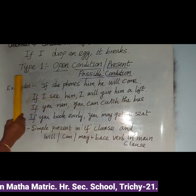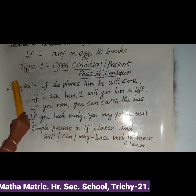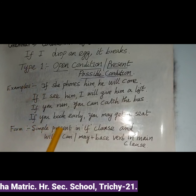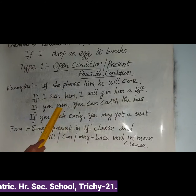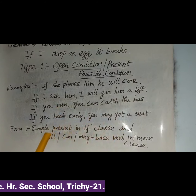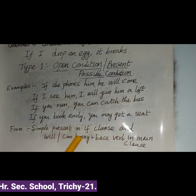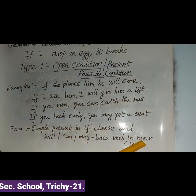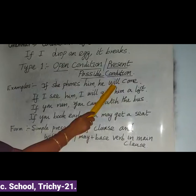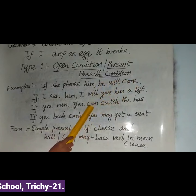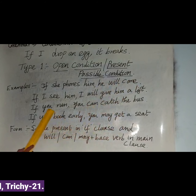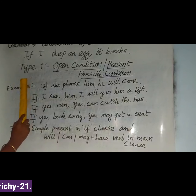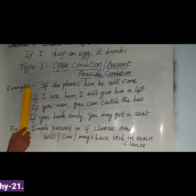So the form of Type 1 is: simple present in the if-clause — phones, see, run, book — and will / can / may plus base verb in the main clause — will come, will give, can catch, may get. I think now you have understood Type 0 and Type 1 conditionals. Thank you, students.